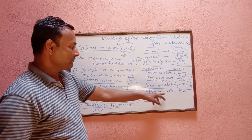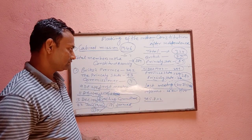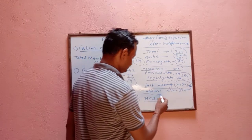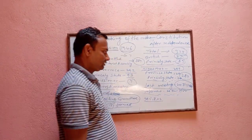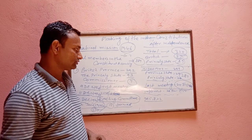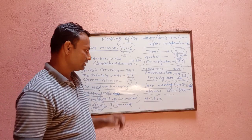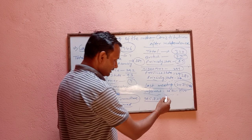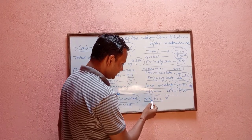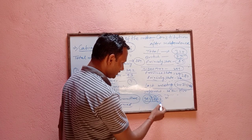The Indian constitution was implemented on 26th January 1950, and India became a Republic. During 1950, the constitution originally had 395 articles, 8 schedules, and 22 parts.